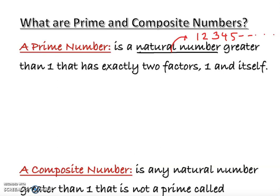Natural numbers exclude zero. If you include zero, we call it a whole number or counting number. So we use the term natural number for the set starting at one.